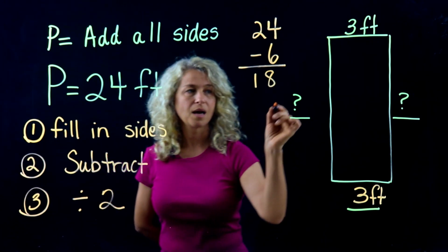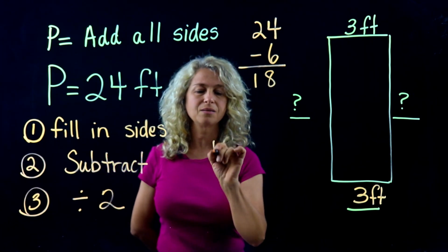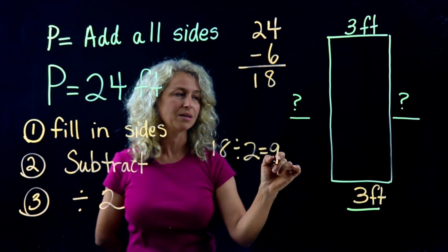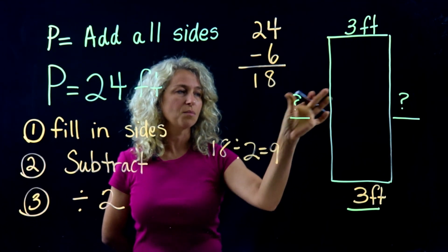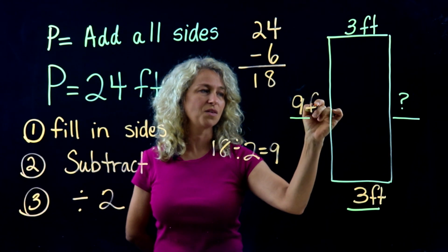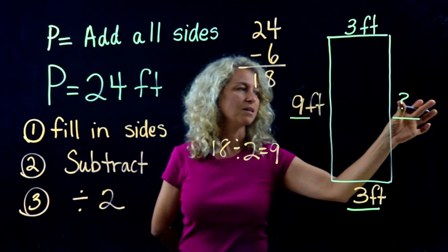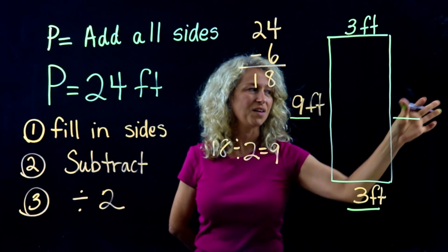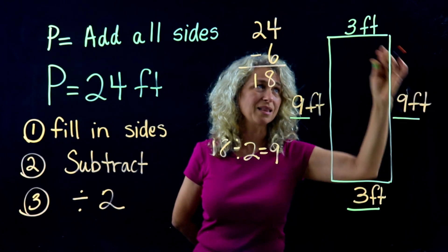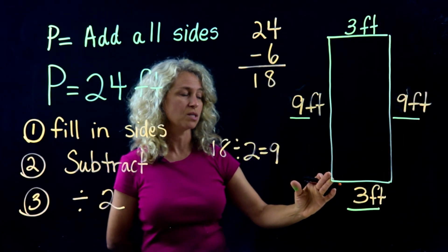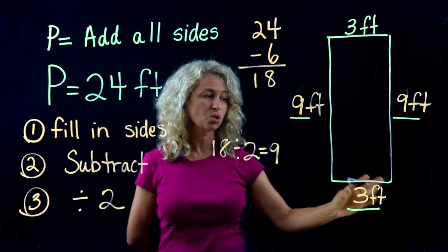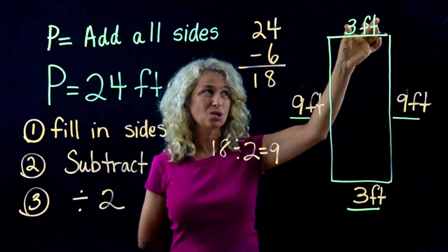Number three: we're going to divide that number by 2. 18 divided by 2 is 9. So our missing side lengths are 9 feet and 9 feet. You can add this back up and double check: 9 plus 3 is 12, and 9 plus 3 is 12.